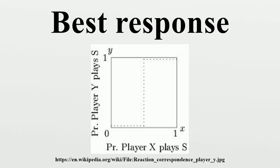Coordination games — games in which players score highest when both players choose the same strategy, such as the stag hunt and battle of the sexes — are called coordination games. These games have reaction correspondences of the same shape as Figure 3, where there is one Nash equilibrium in the bottom left corner, another in the top right, and a mixing Nash somewhere along the diagonal between the other two.